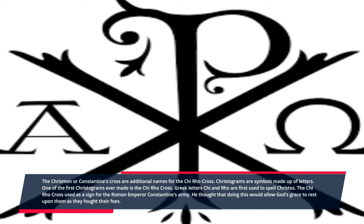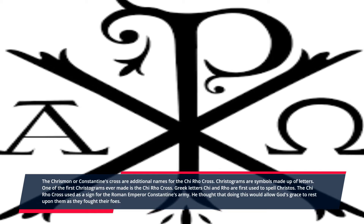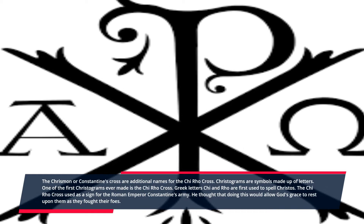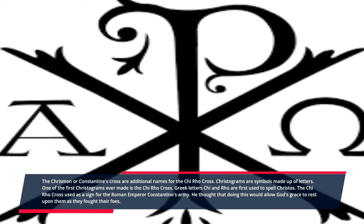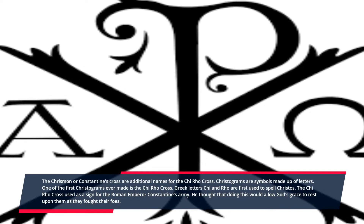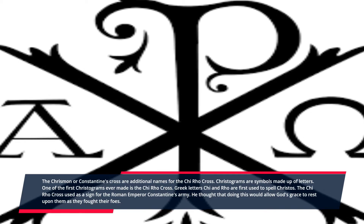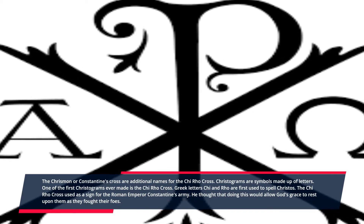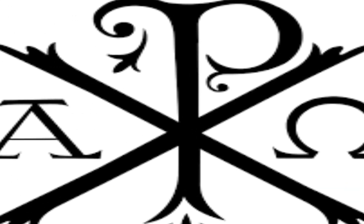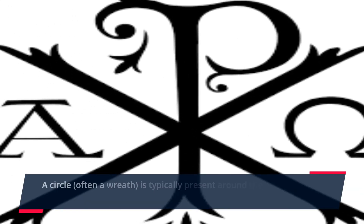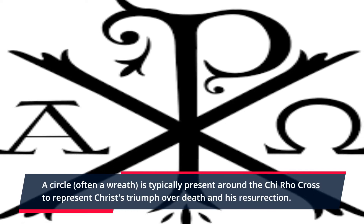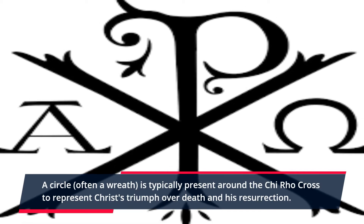Number six: the Chi-Rho Cross. Also called the Chrismon or Constantine's Cross, it is one of the first Christograms ever made. The Greek letters Chi and Rho are the first letters used to spell 'Christos.' The Chi-Rho was used as a sign for the Roman Emperor Constantine's army, as he believed doing so would allow God's grace to rest upon his soldiers as they fought their foes.